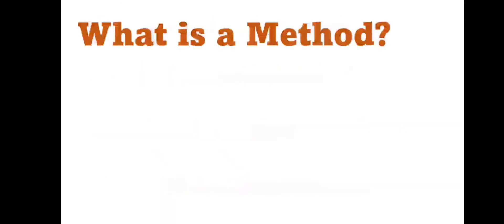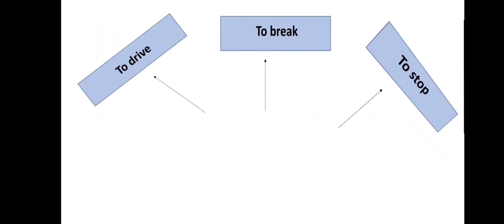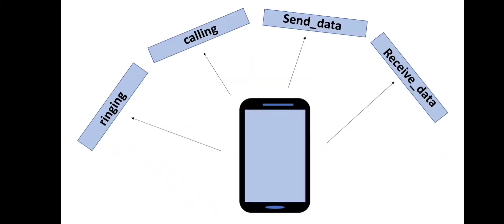First we are going to discuss about what is a method. A method is an action or a function used to perform a particular task. From a real life point of view, to drive, to brake, to stop — these are the actions of a car. Similarly, talking, walking, eating are the actions of a human. In Java we need to perform some actions like ringing, calling, send data, receive data — these are the actions or functions of a mobile phone, and we can write these actions using a method in Java.